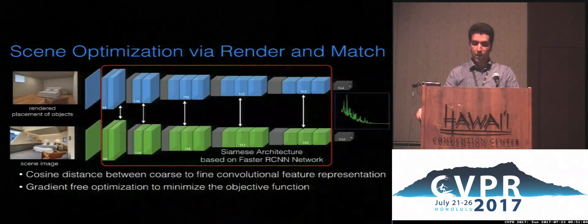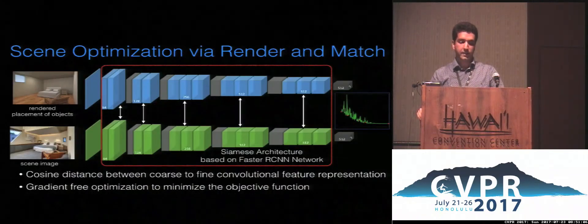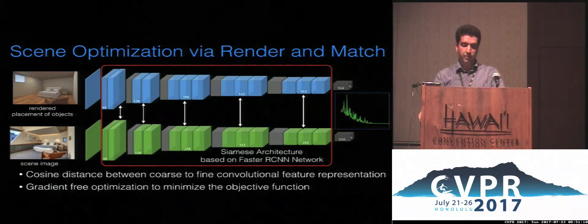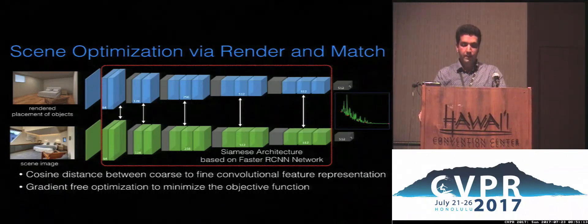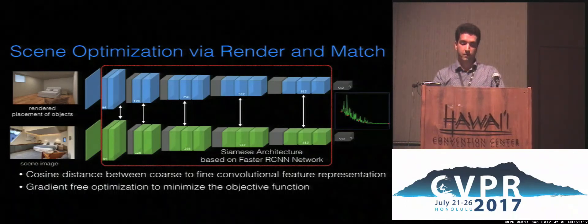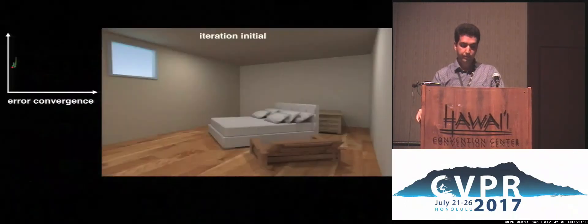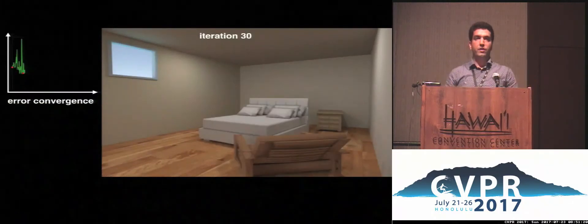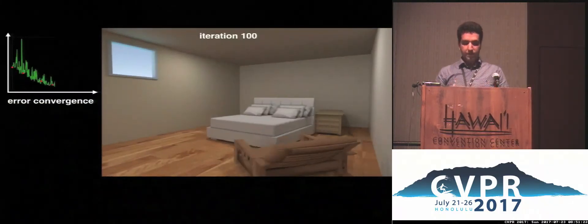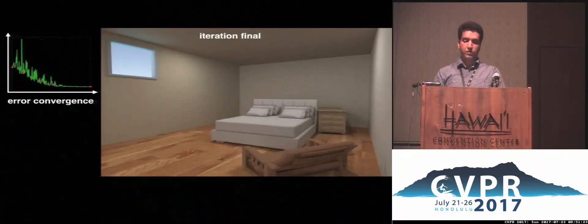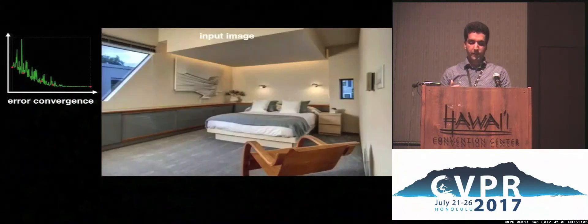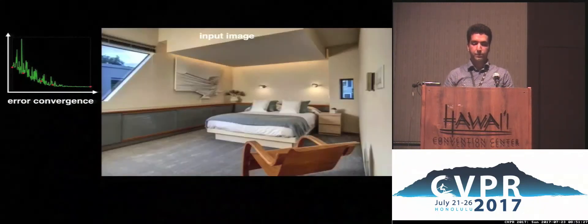For scene optimization, we use cosine distance between the convolutional features of the rendered scene and the input image as the objective function, and use a gradient-free optimization called COBLA to minimize the objective function. Here we show an iterative optimization, displaying the value of the objective function on the top left and the rendering of the scene in simulation with the corresponding object arrangement.